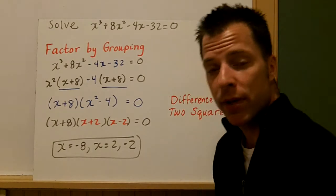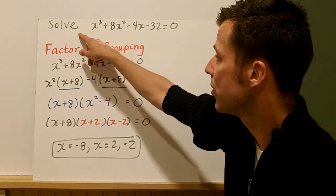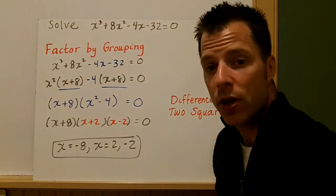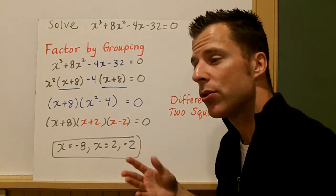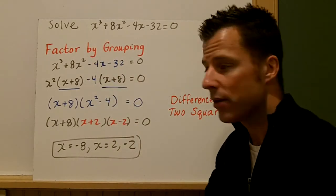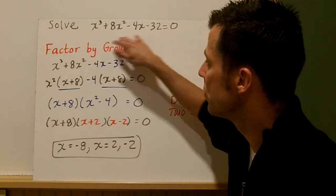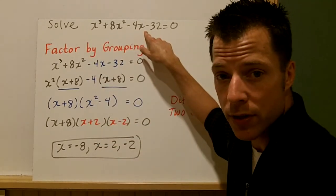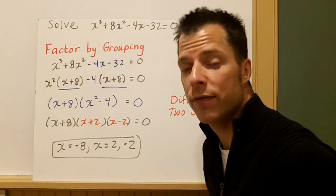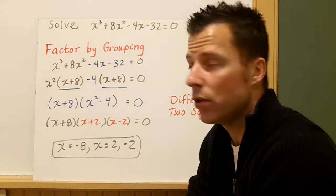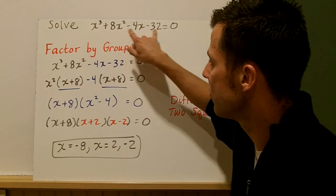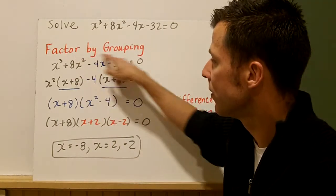This next example has four terms: x³ + 8x² − 4x − 32. It's not a quadratic, not a difference of two squares, and not a sum of cubes because there are more than two terms. Since there are four terms, we'll try factoring by grouping. Looking at the first two terms and the last two terms, there seem to be common factors to work with.